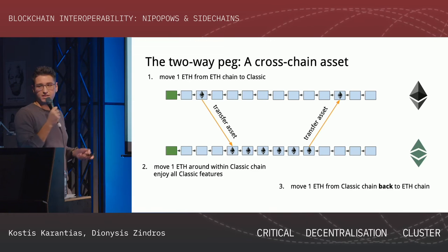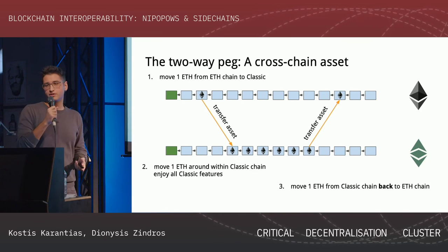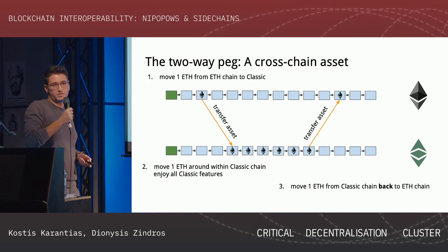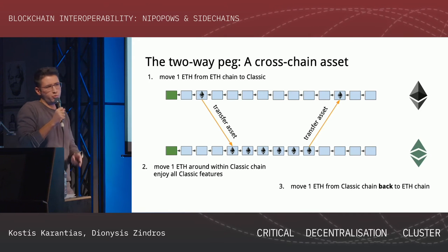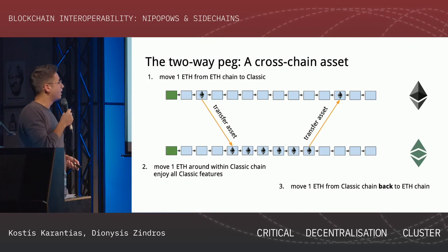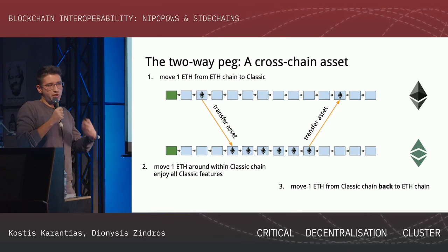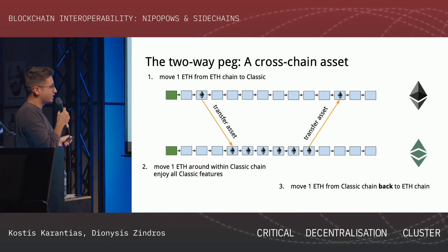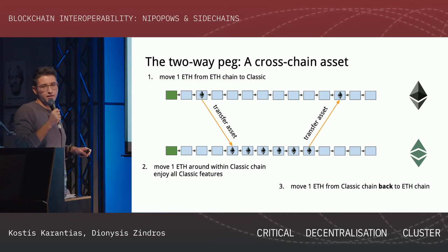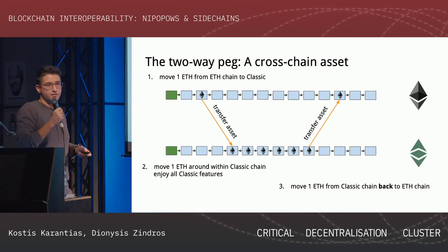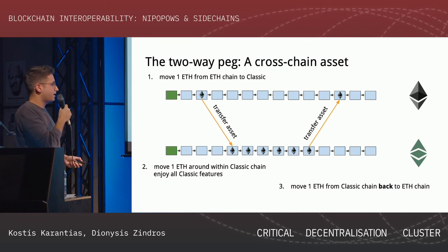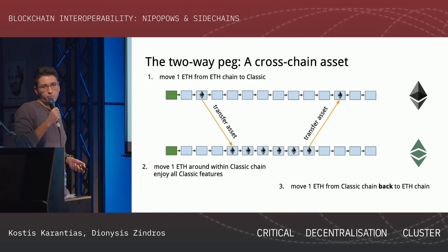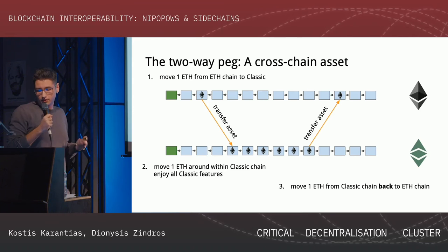Imagine you have some Ethereum on the Ethereum chain and you want to use it on Ethereum Classic — maybe because transactions are cheaper there, or you want to use a DEX on Ethereum Classic. You want to transfer this asset to Ethereum Classic, use it as a regular token — send it to people and smart contracts — and then when you're done, return it to Ethereum. This is what a two-way peg is.